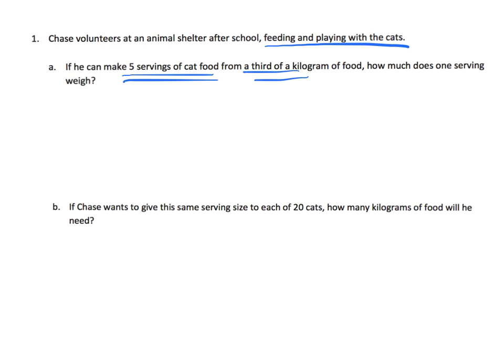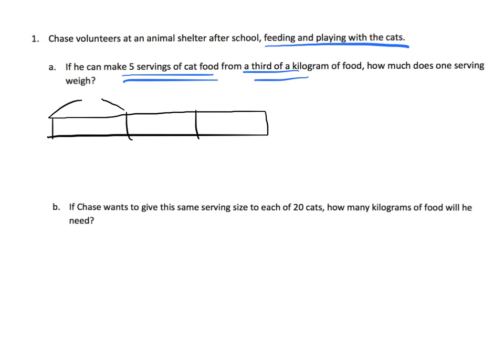Alright, so we're going to begin by drawing our tape diagram, and we're going to begin by drawing a picture of a third. Here is our picture of a third, and we learn that he can make 5 servings from that one third. So that means I can cut it up into 5 equal-sized pieces, and one of those is a serving.